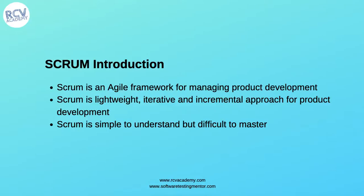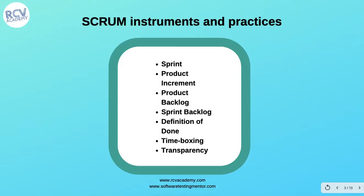Let's see what Scrum talks about in detail. Some of the key Scrum instruments and practices are: a sprint, product increment, product backlog, sprint backlog, definition of done, time boxing, and transparency. Let's see these instruments and practices in detail.